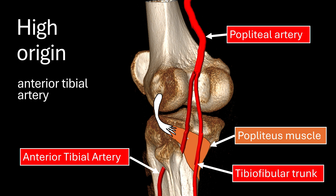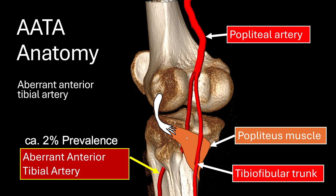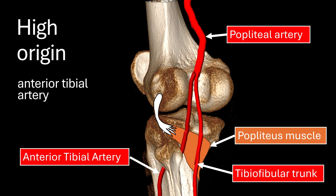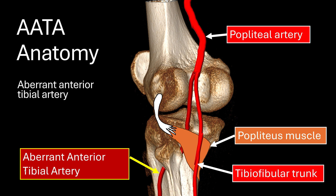Now let's look at the aberrant version — the aberrant anterior tibial artery. Again, we have a high origin, but this time the artery goes between or underneath the popliteus muscle. So it's now running between muscle and bone, then going down the same location. The only real difference is it goes between muscle and bone, whereas in the high origin variant it is behind the muscle. That's basically the distinction, and this is the aberrant anterior tibial artery.